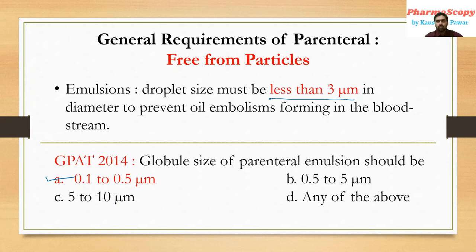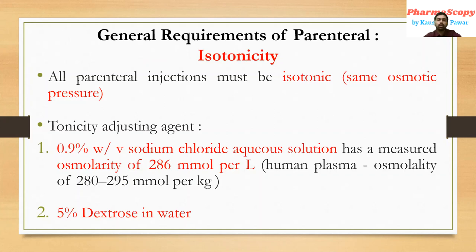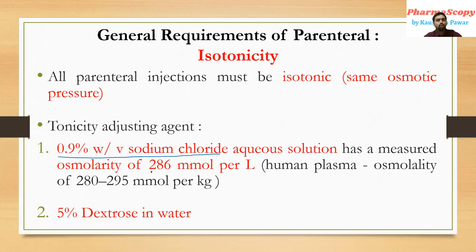Now let's move to the last and most important parameter: isotonicity. Any parenteral formulation must be isotonic, meaning it should have the same osmotic pressure as blood. There are two widely used tonicity adjusting agents. The first is 0.9% w/v sodium chloride aqueous solution, which has an osmolarity of 286 millimol per litre — within the range of human plasma osmolality of 280 to 295 millimol per kg.